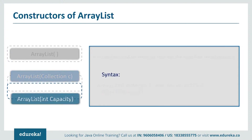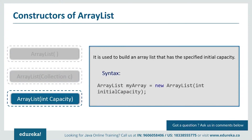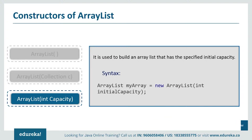Next, ArrayList(int capacity) — this is used to build an ArrayList that has a specified initial capacity. Initial capacity is the number of cells that the ArrayList starts with; it can expand beyond this capacity if you add more elements. Now let's see a small example to understand how and where these constructors are used in ArrayList.